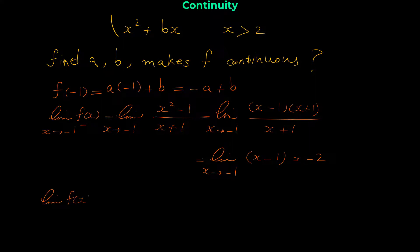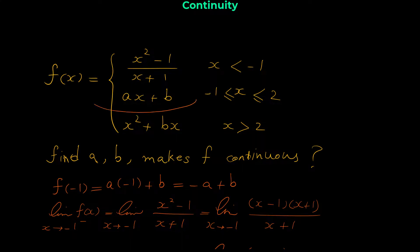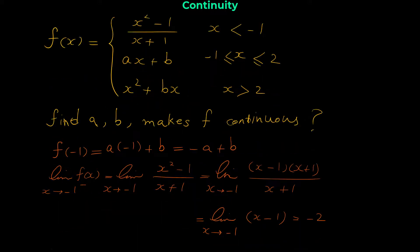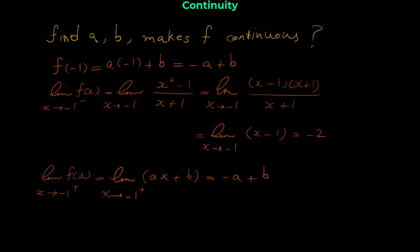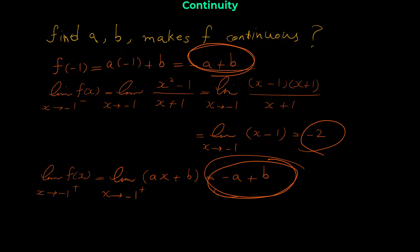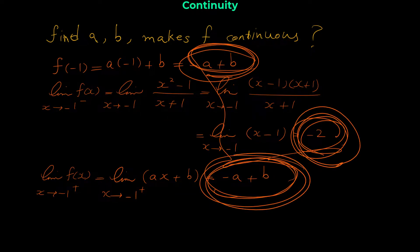For the right limit as x approaches -1 from the right, x is slightly greater than -1, so we use the equation ax + b. Plugging in -1 gives -a + b. To make f continuous, the left limit, right limit, and function value must all be equal. The left limit (-2) and the right limit (-a + b) must be set equal, giving us one equation relating a and b.